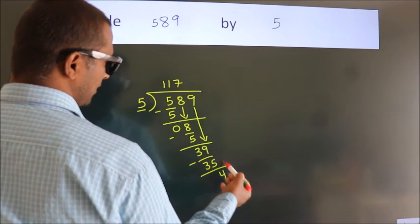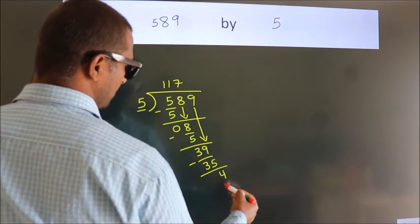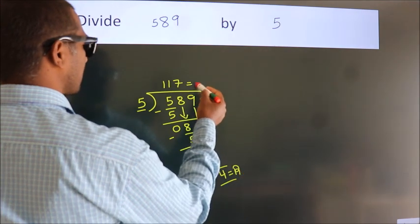After this, no more numbers to bring it down. So, we stop here. This is our remainder. This is our quotient.